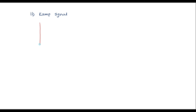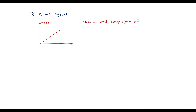The ramp signal is represented as r of t. For the unit ramp signal, the slope is equal to 1. Mathematically, the ramp signal is represented as r of t equal to t for t greater than or equal to 0, and 0 for t less than 0. Now we will find the Laplace transform of the ramp signal, where f of t is equal to r of t.